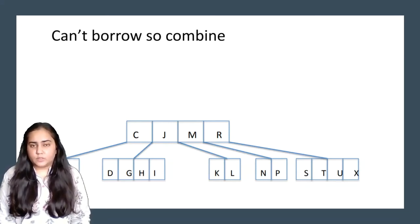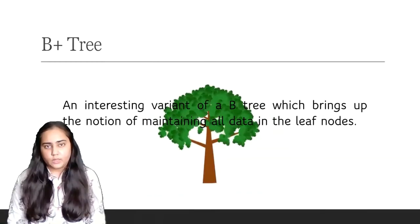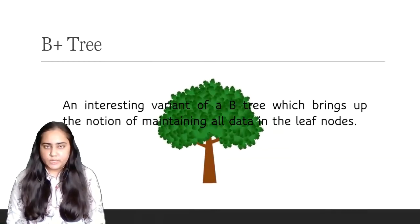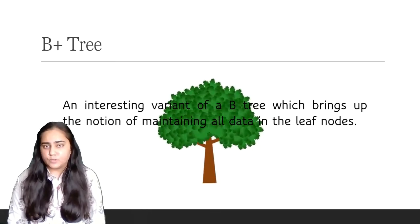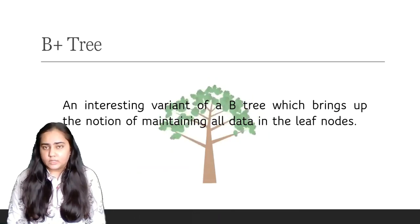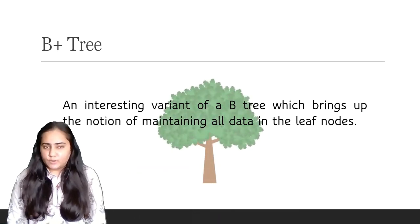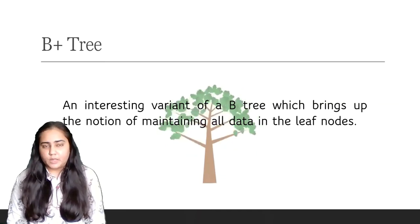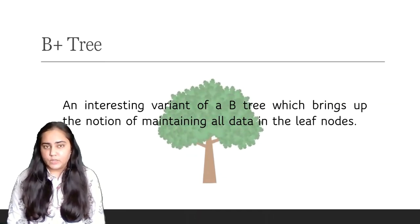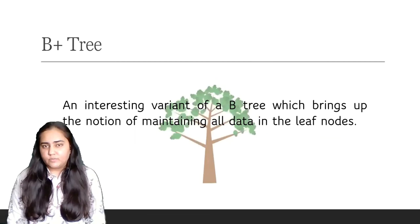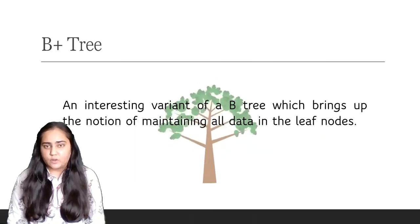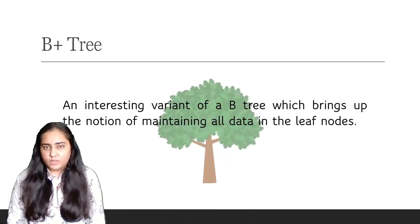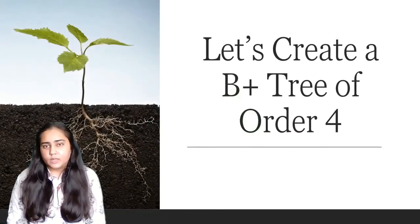A B-plus tree is an interesting variant of a B-tree, which brings up the notion of maintaining all data in the leaf nodes. Since we've already studied a B-tree, it will be easier to understand the B-plus tree — it is just some variation of a B-tree. The main goal is to have all data stored within the leaf nodes. Let's create an example: a B-plus tree of order 4.